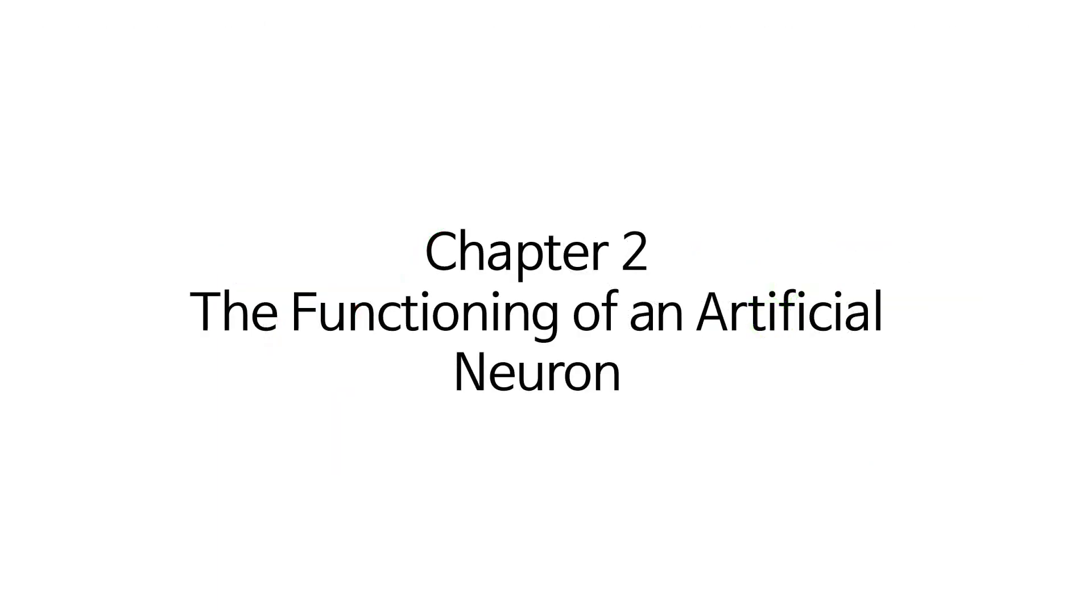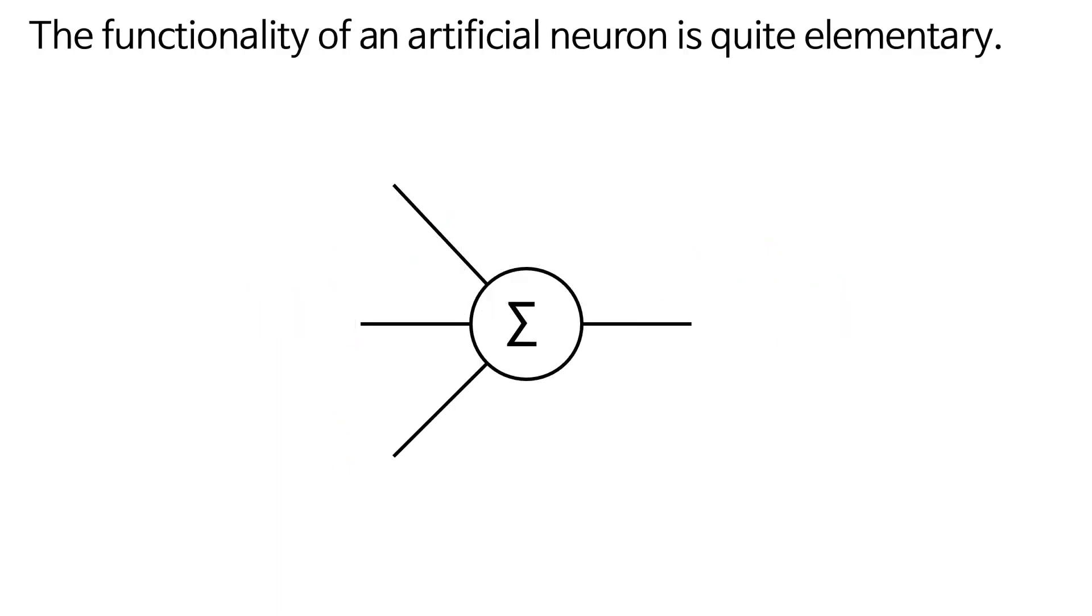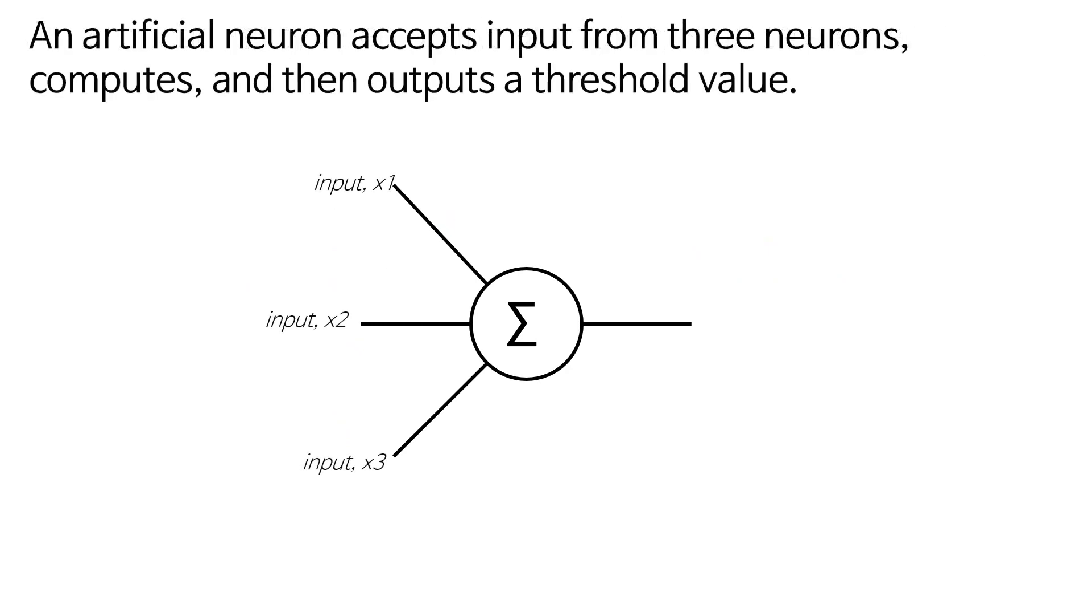Chapter 2: The Functioning of an Artificial Neuron. The functionality of an artificial neuron is quite elementary. An artificial neuron accepts input from three neurons, computes, and then outputs a threshold value.